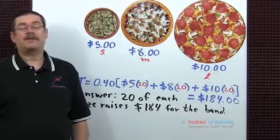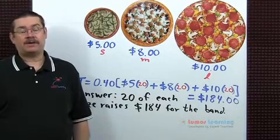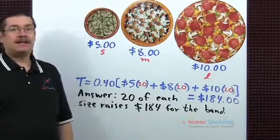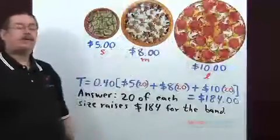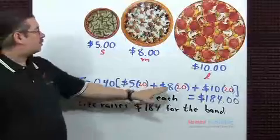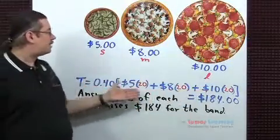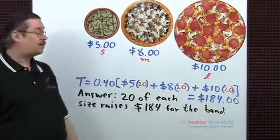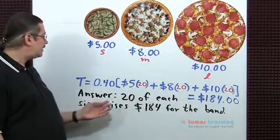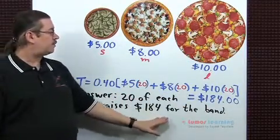There are many ways of answering the second part of this question, so I recommend you ask your teacher to see if you have the correct one. One possible answer is to just sell 20 of each size of pizza. When you replace the variables with the number 20 and evaluate the equation, you get $184. So an answer could be: 20 of each size raises $184 for the band.